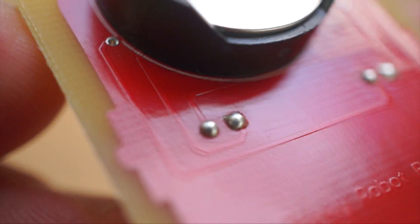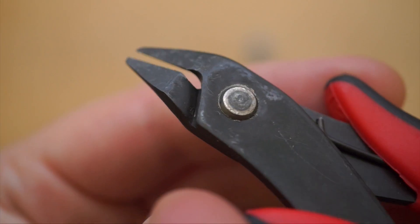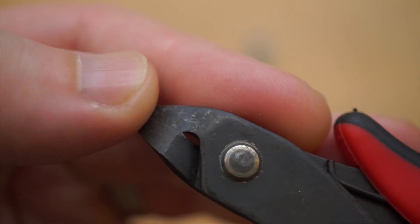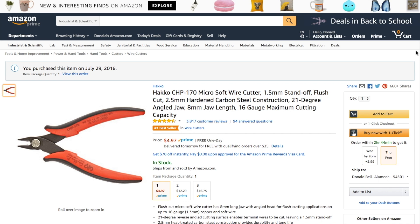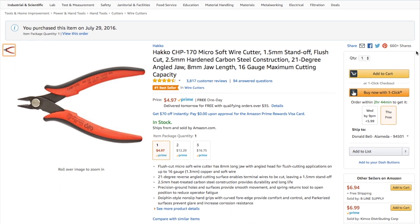You don't need any special soldering iron or solder to make this technique work, but you really do need the flush cutters to get up right against the board. I've got a link to these exact ones in the description.